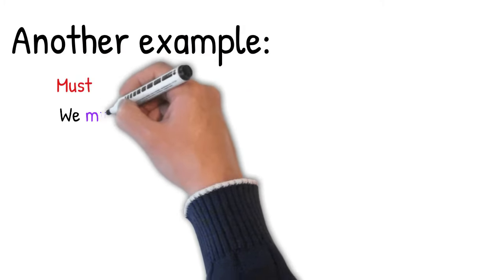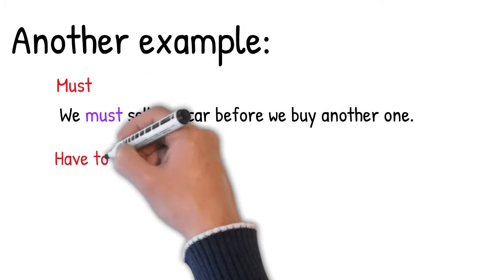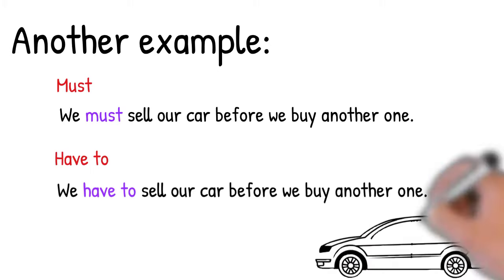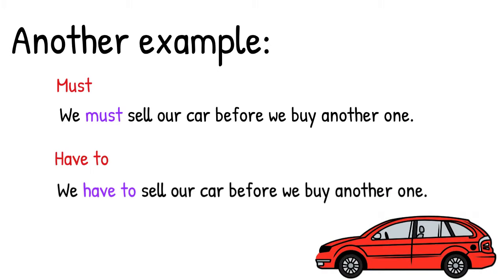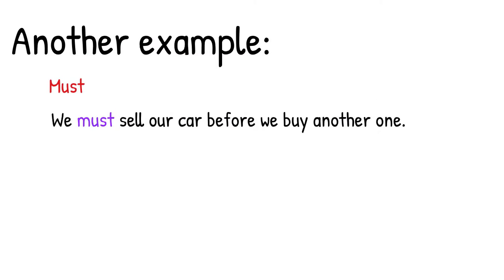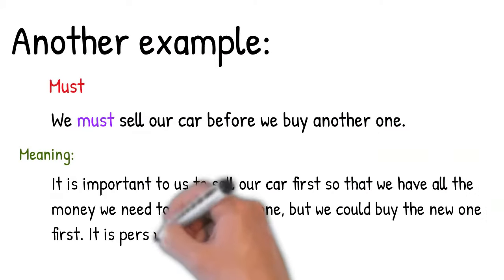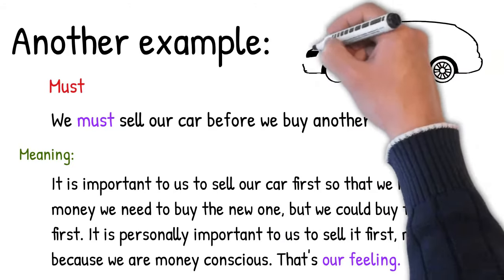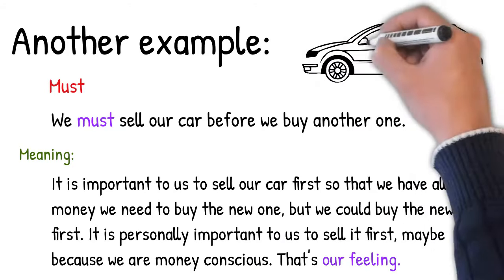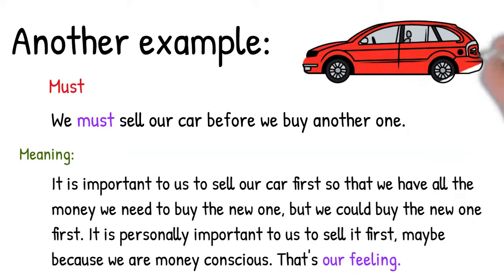Let's look at another example. Must: 'We must sell our car before we buy another one.' Have to: 'We have to sell our car before we buy another one.' They have a slightly different meaning. With must, the meaning is personal — it's important to us to sell our first car so that we have all the money we need to buy the new one. But we could buy the new one first if we wanted to.